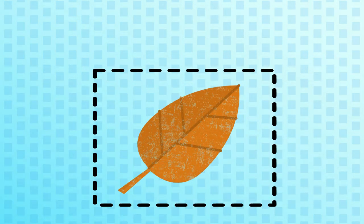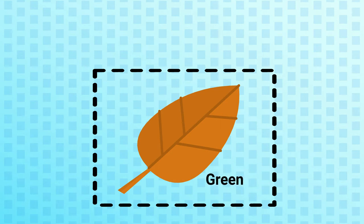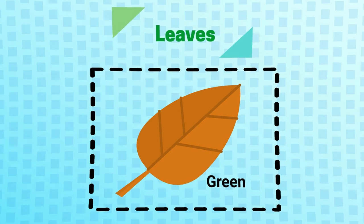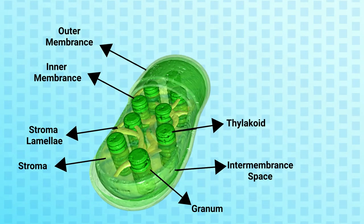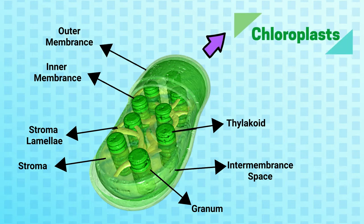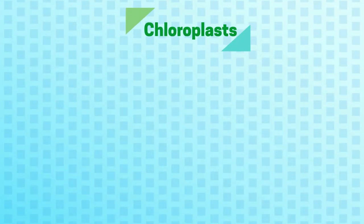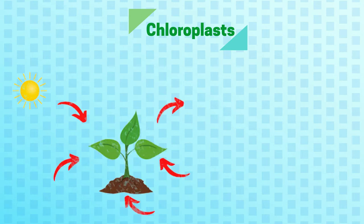Photosynthesis happens in all green parts of a plant. The cells of a plant leaf have special components known as chloroplasts which contain a green colored pigment called chlorophyll. This chlorophyll not only gives the green color to the leaves but also helps the plant absorb sunlight for the process of photosynthesis.